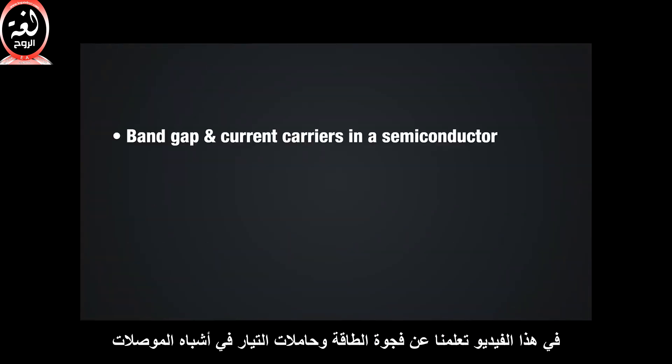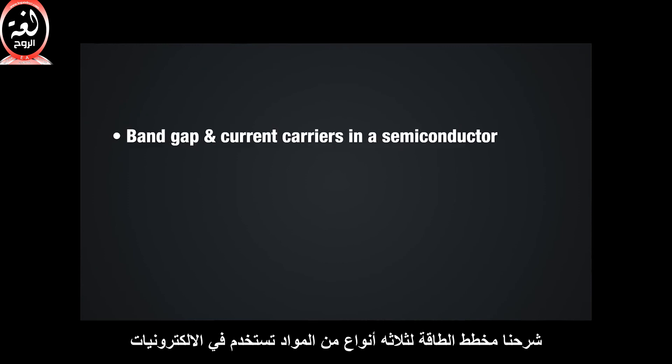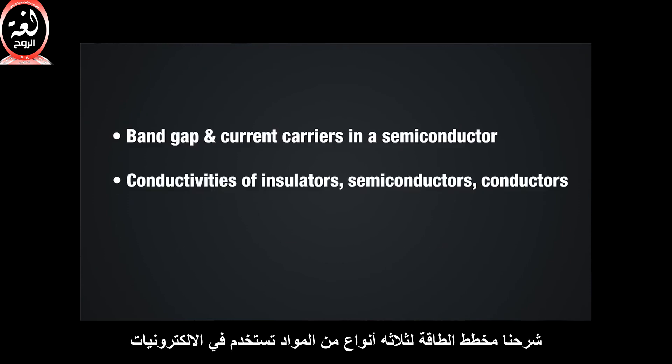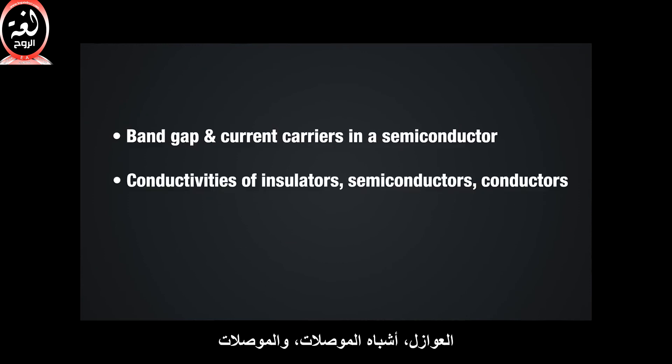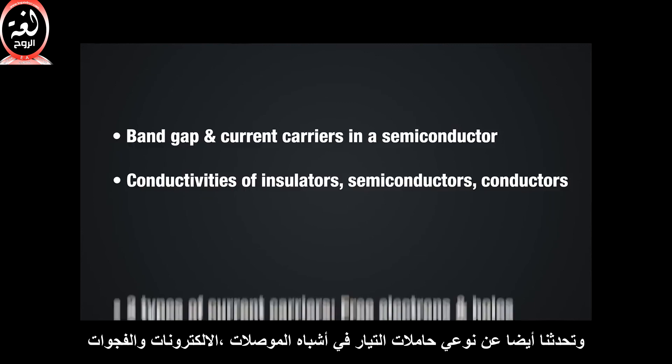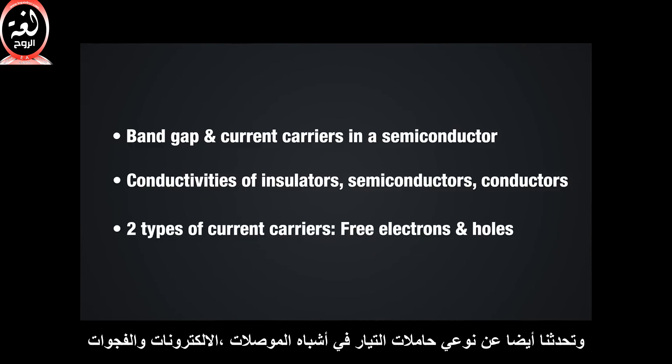In this video, we learned about band gap and the current carriers in a semiconductor. We examined the energy diagram of the three types of materials used in electronics — insulators, semiconductors, and conductors — and briefly discussed their conductivities. We also talked about the two types of semiconductor current carriers, free electrons and holes, and mentioned how they produce current in a semiconductor material.